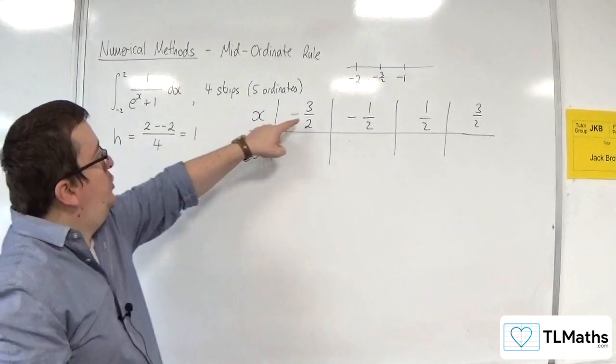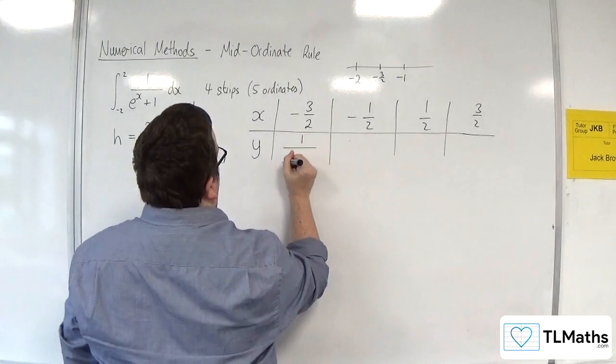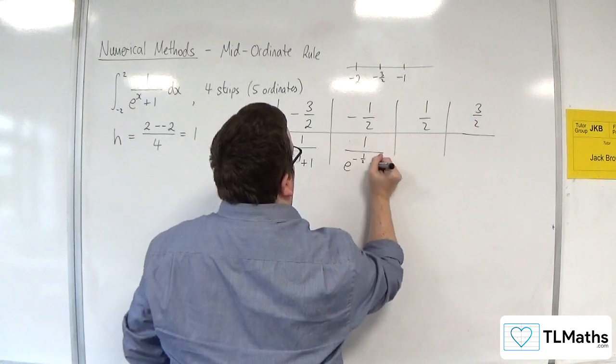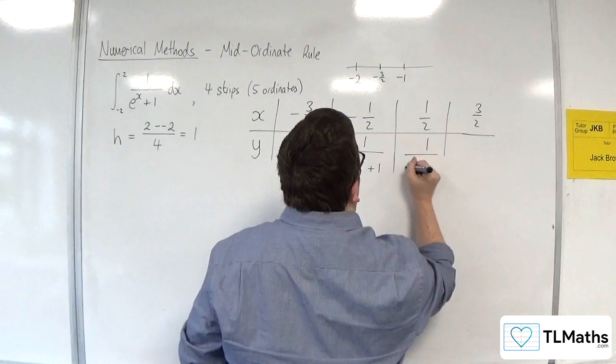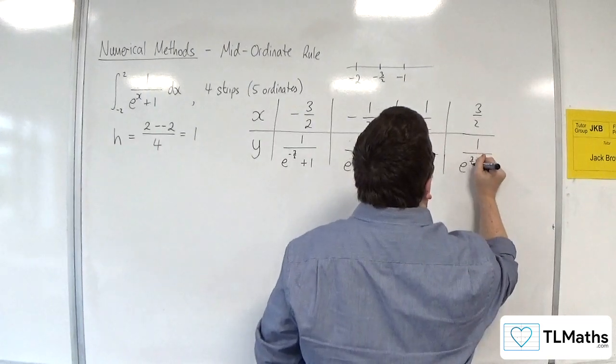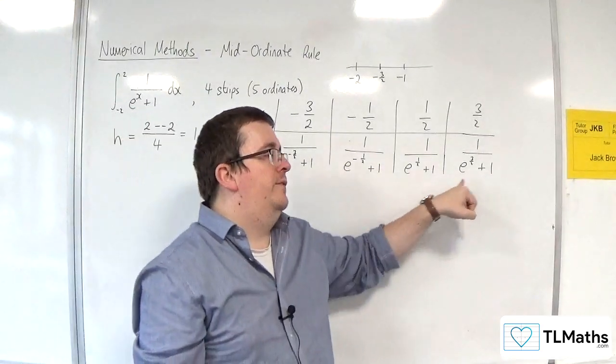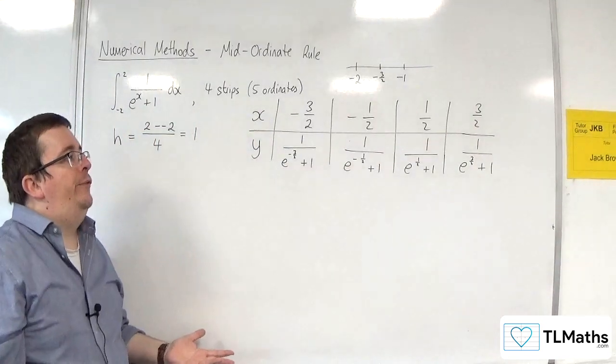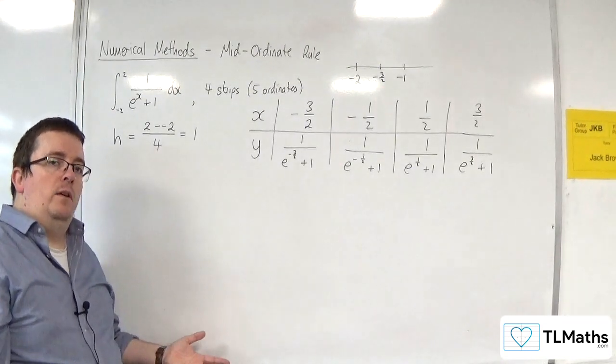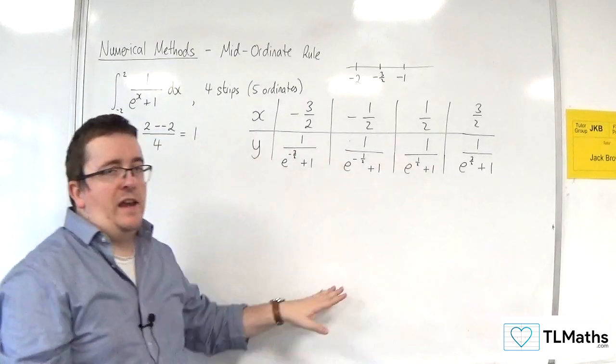So then I need to substitute each of these x values into my y. So that will be 1 over e to the minus 3 halves plus 1. Then 1 over e to the minus 1 half plus 1. Then we're going to have 1 over e to the half plus 1. And then 1 over e to the 3 halves plus 1. Now if you want to put in decimalised values here and evaluate each of these, you can. I would use a good number of significant figures. So don't round them too early. You want to use a good set of significant figures there so that when you combine them, then you round right at the end.